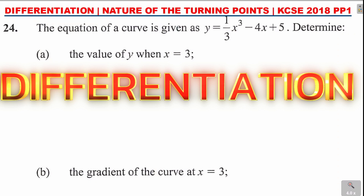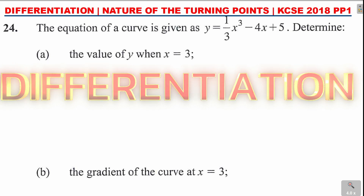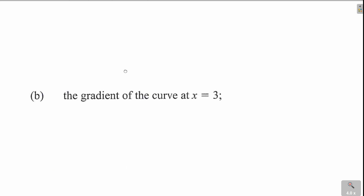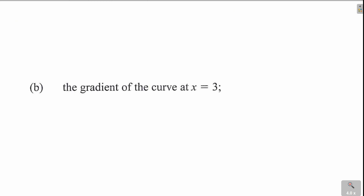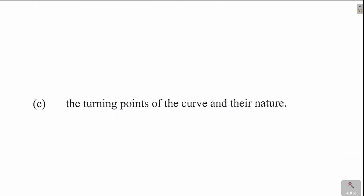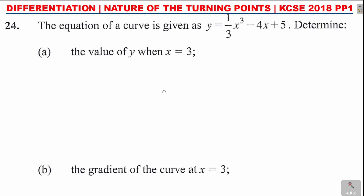Welcome to differentiation, KCC 2018 Paper 1. The question is here: the equation of a curve is given as y equals one-third x cubed minus 4x plus 5. Determine (a) the value of y when x equals 3, (b) the gradient of the curve at x equals 3, and (c) the turning points of the curve and their nature.